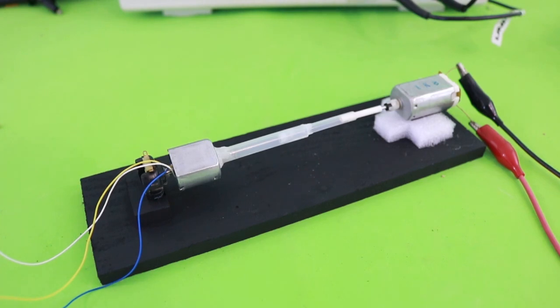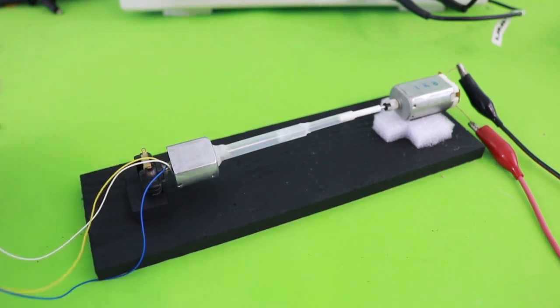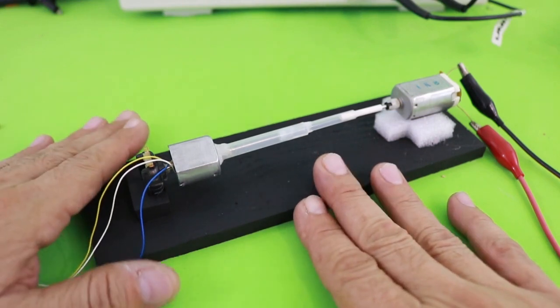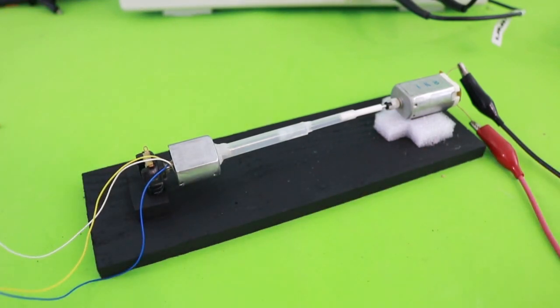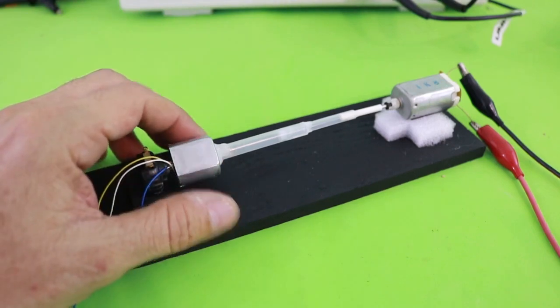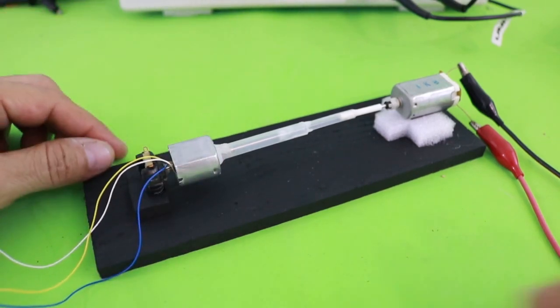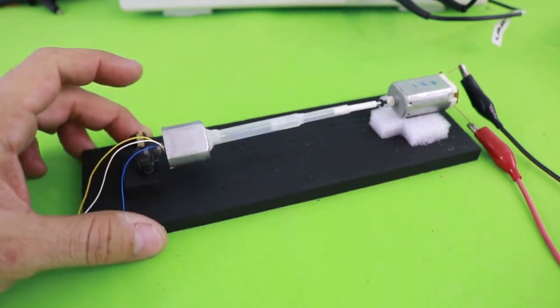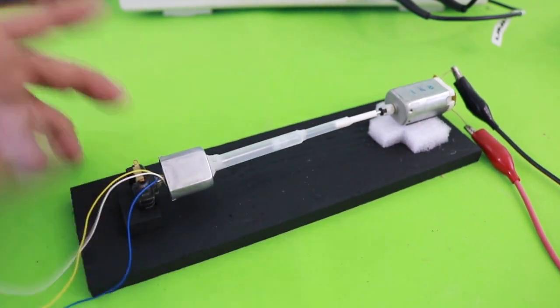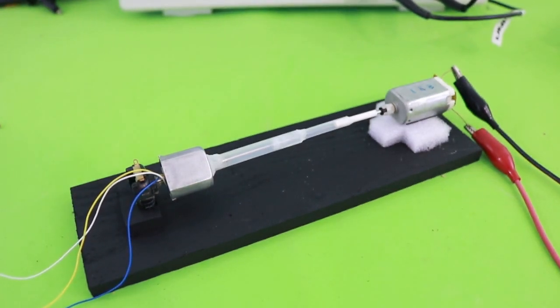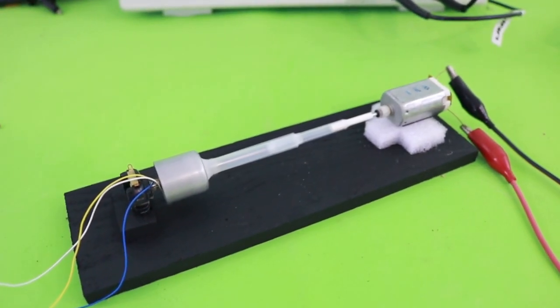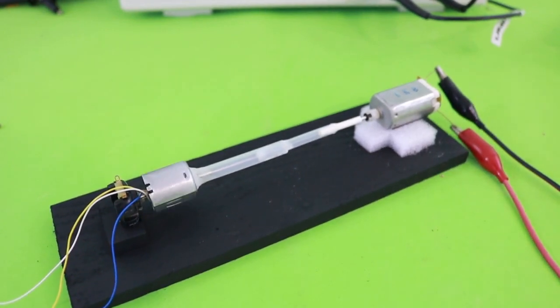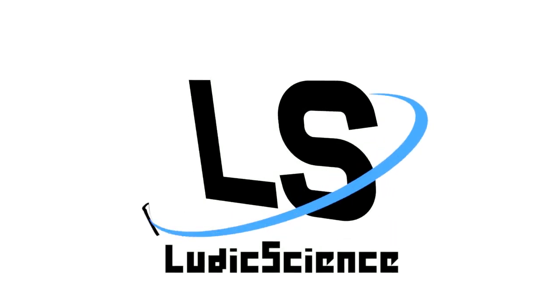There you have a simple project for a three-phase alternator from a DC motor. Of course, this is just a model and you cannot get a lot of power from this, but if you want to scale it up, you can use a larger electric motor and maybe couple the axis to a wind turbine or hydraulic turbine. I hope you liked the video. Thanks for your visit and see you in the next one.